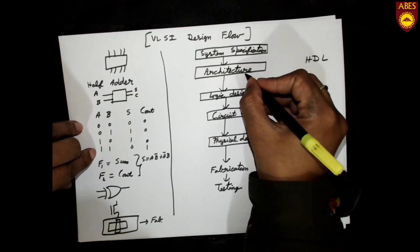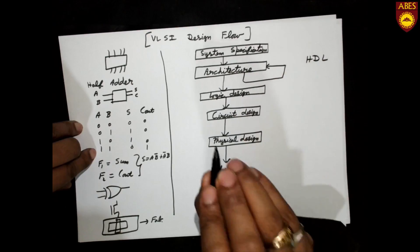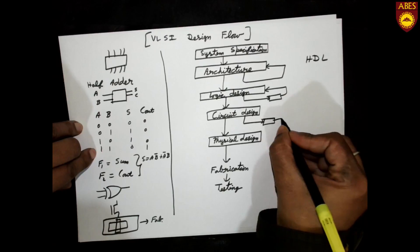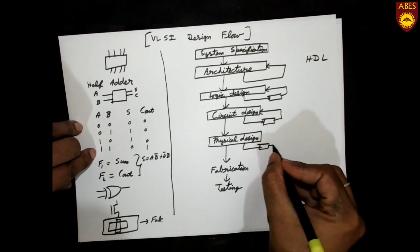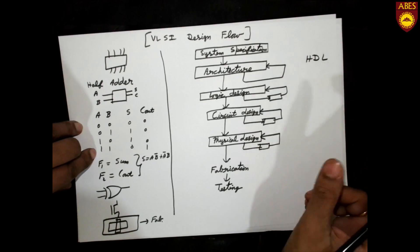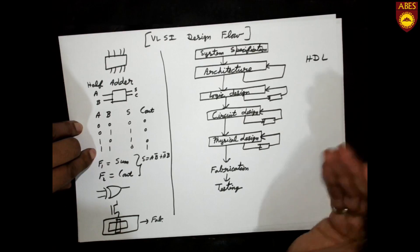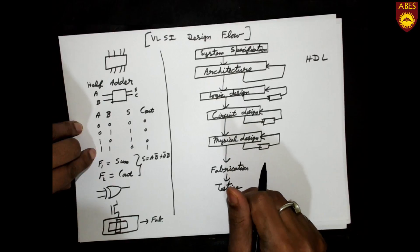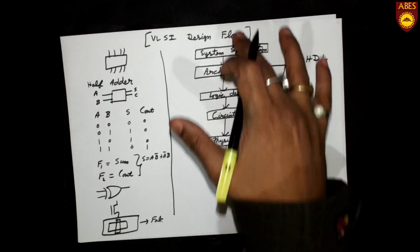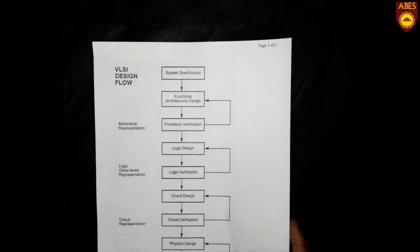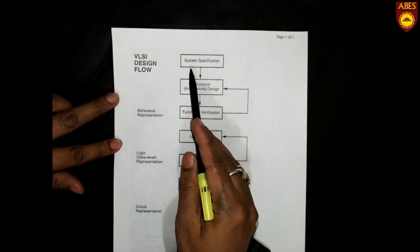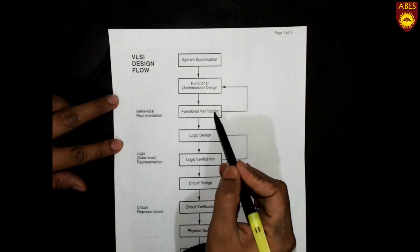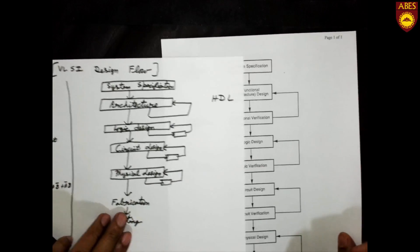The same verification rule applies at every stage — architecture, physical design layout, and fabricated device — each must be verified before moving forward. So the complete VLSI design flow starts from system specification, then architectural design (also called functional design), followed by verification of that architecture.